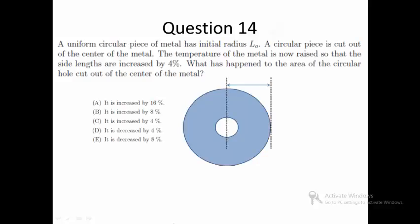Question 14. A uniform circular piece of metal has initial radius L0. A circular piece is cut out of the center of the metal. The temperature of the metal is now raised so that the side lengths are increased by 4%. What has happened to the area of the circular hole cut out of the center of the metal?